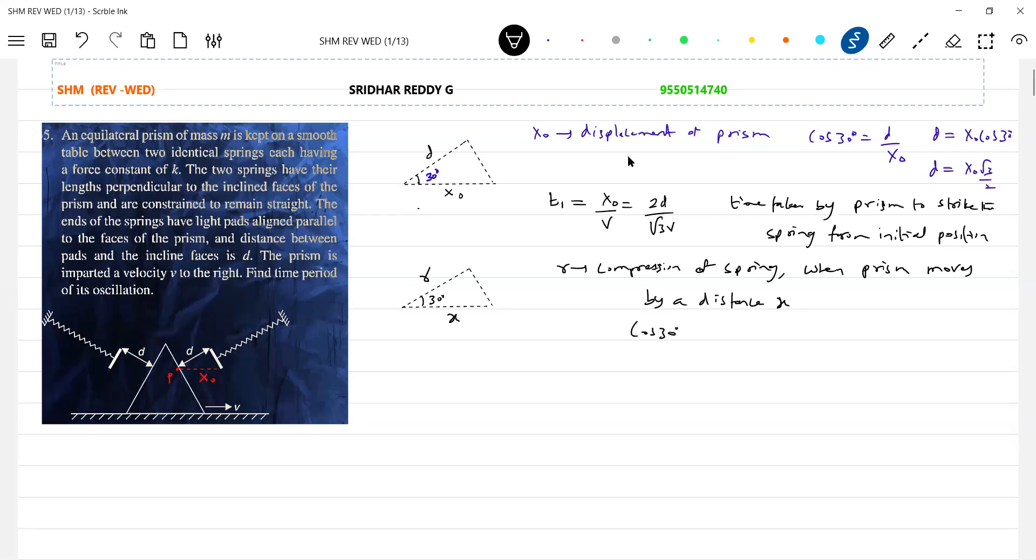Now again, cos 30 equals R by X. I'm interested in the compression of the spring. So X equal to... We need R.